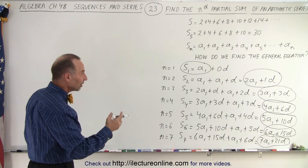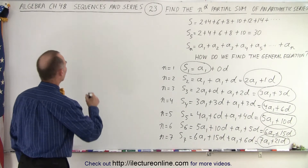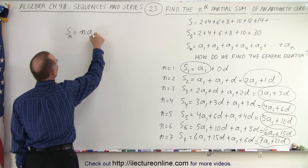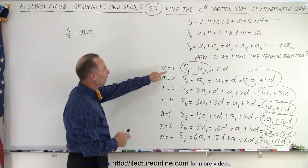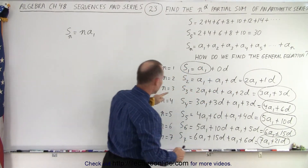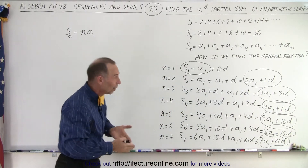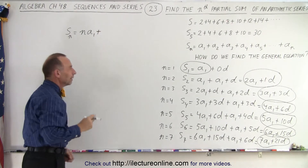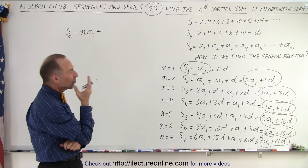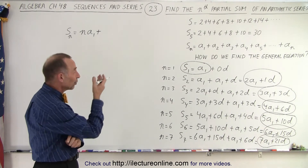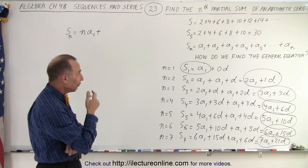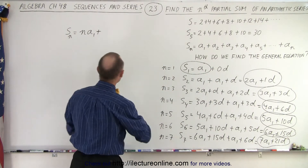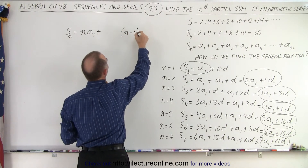Now we should be able to come up with a general equation. S sub n equals n times a sub 1 — that's the easy part. We need an expression for the d coefficients: 0, 1, 3, 6, 10, 15, 21. When n is 1 we get 0d's, so maybe we need an (n minus 1) times d term.